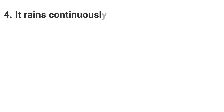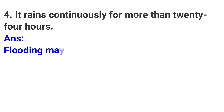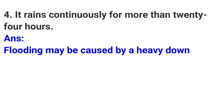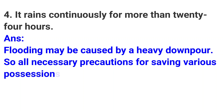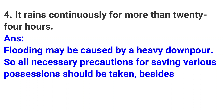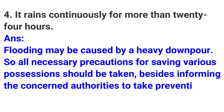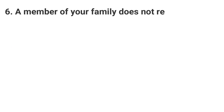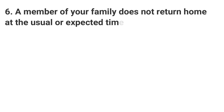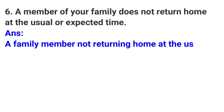Fifth: It rains continuously for more than 24 hours. Answer: Flooding may be caused by a heavy downpour, so all necessary precautions for saving various possessions should be taken, besides informing the concerned authorities to take preventive action. Sixth: A member of your family does not return home at the usual or expected time.